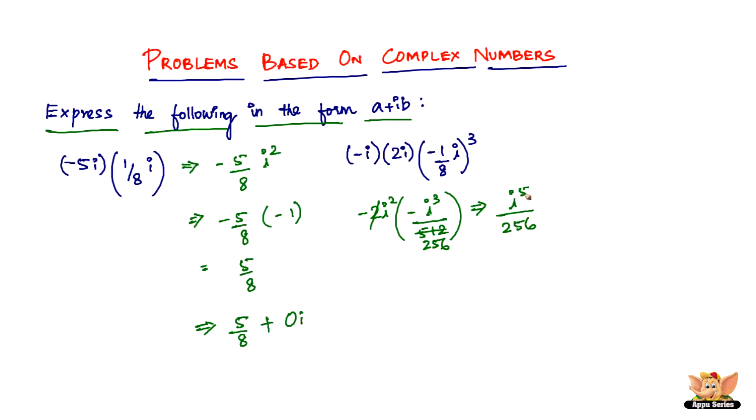In this case it is 5, so divide 5 by 4. You have 4 times 1 is 4, the remainder is 1. The remainder replaces the exponent, so we get i divided by 256.